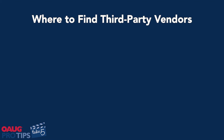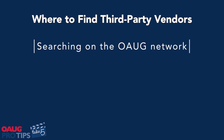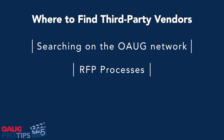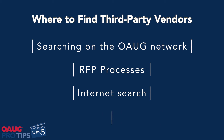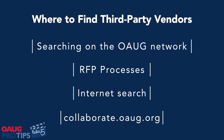When choosing a third-party vendor, there are a couple of ways to go about it. There are vendors you can find on the OAUG network, RFP processes you can go through, or a simple Google search to find a company that meets your business needs. For us, we used Collaborate — that's our primary focus when we come here — trying to find solutions that are going to meet our business needs.